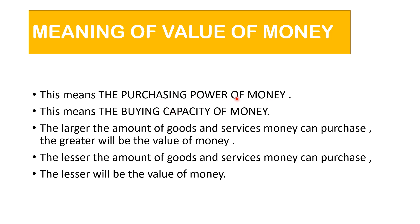Money is the purchasing power of money — it has the buying capacity. You can buy X number of things. The larger the amount of goods and services money can purchase, greater will be the value of money. You go on accumulating more and more money and more goods and services you are able to buy. If lesser the amount of goods and services the money can purchase, lesser will be the value of money. The value of money is directly proportional to the amount of goods it can buy. More you can purchase, more is the value of money.